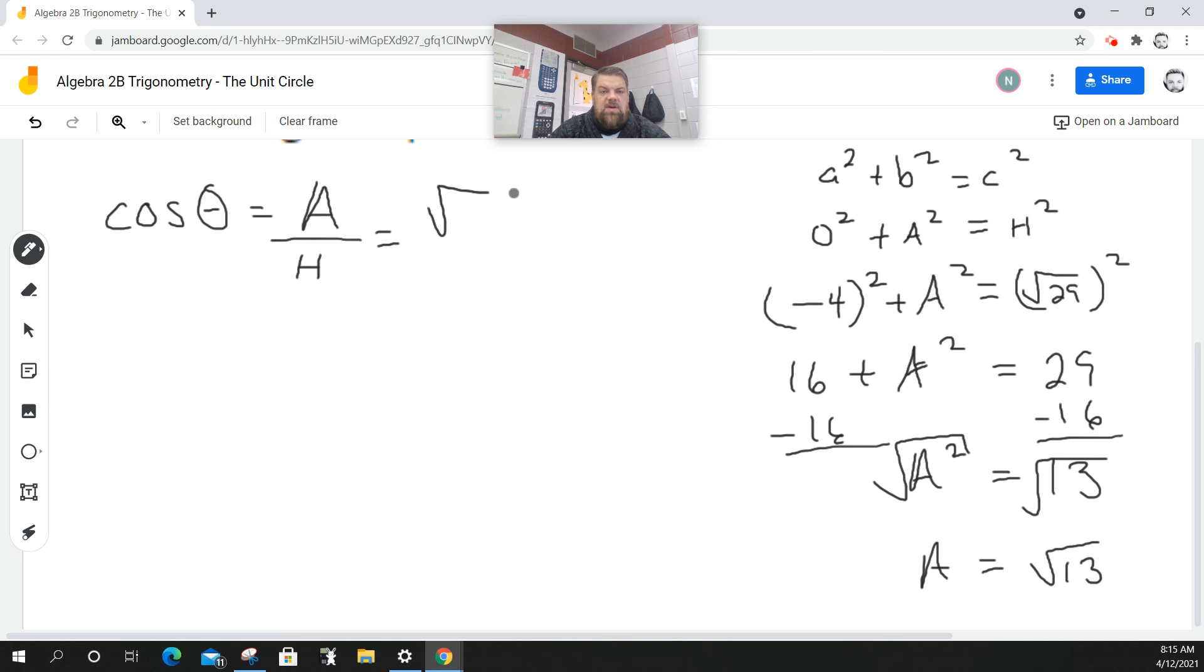So then my adjacent is the square root of 13 all over the square root of 29. But I have to rationalize the denominator. So I have to multiply this by the square root of 29 on the bottom and the square root of 29 on the top.